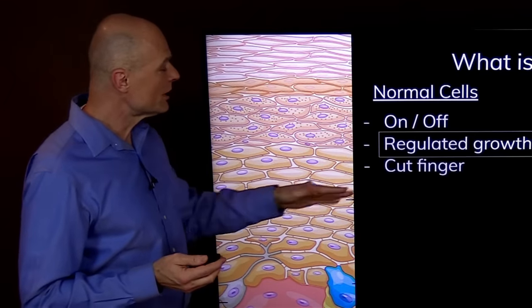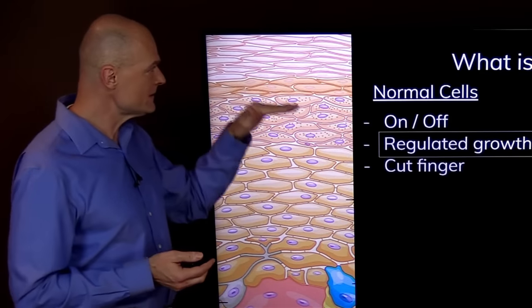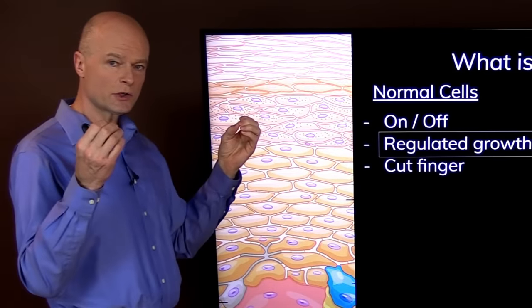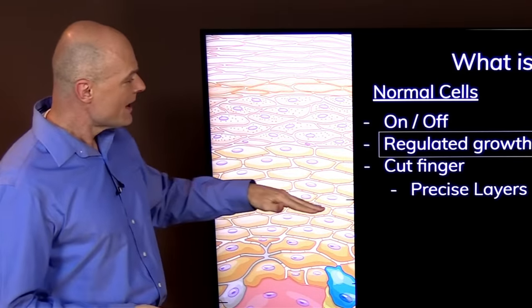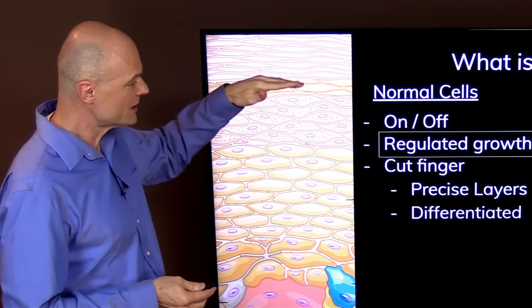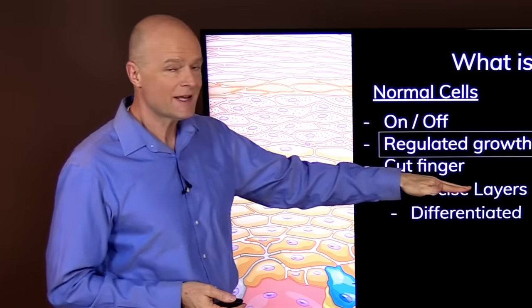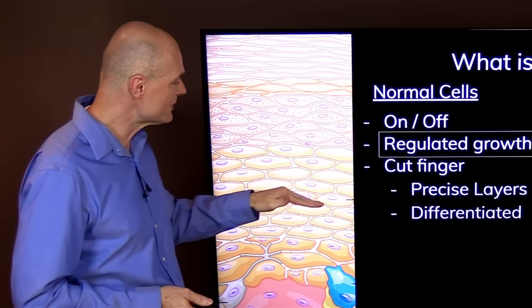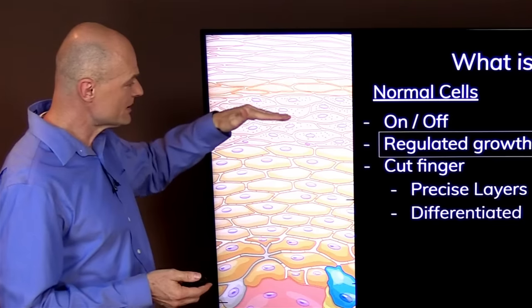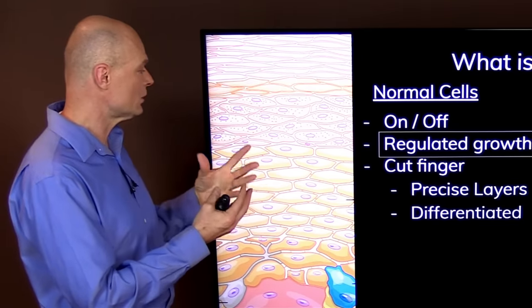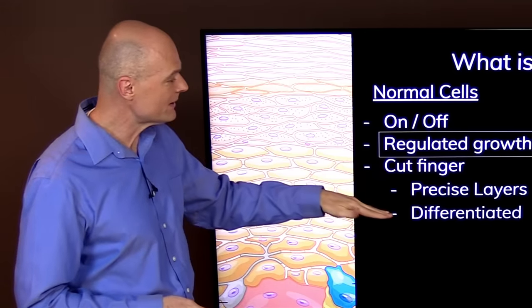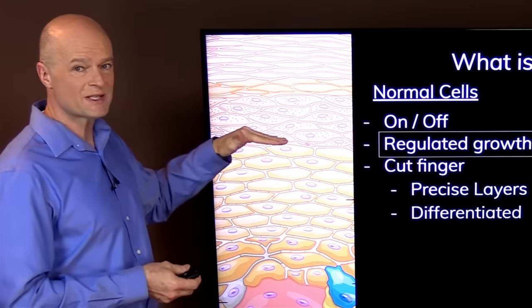An example would be if you cut your finger. These are different layers of skin cells. If you cut it, your body is going to start making new cells and create these precise layers with different functions. The cells are called differentiated because they have different purposes. They all start with the same type of cell called a stem cell, but then as they develop they mature, they differentiate and serve their specific purpose.